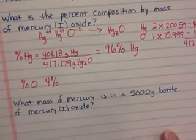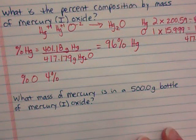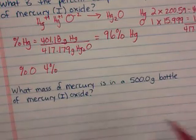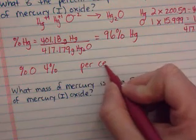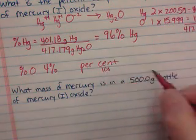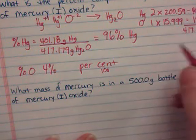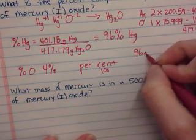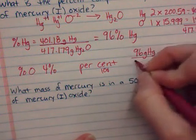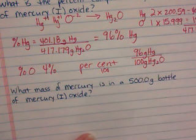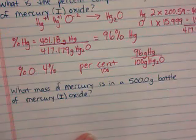Now, percents are useful. We can tell people, oh, that compound is 96% mercury by mass. But we can also use that as a conversion factor. Since percent means out of 100, per cent means per 100, we could turn our percents into fractions out of 100. So that means we would have 96 grams of mercury for every 100 grams of mercury oxide. And we can use that as a conversion factor.